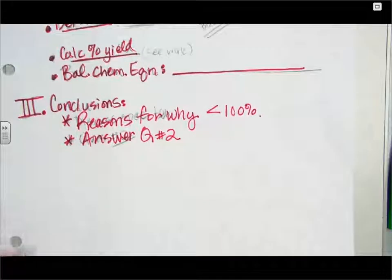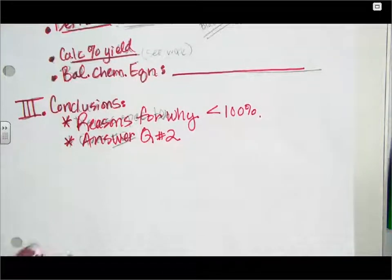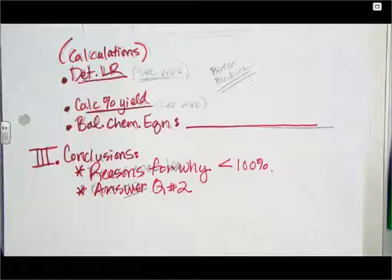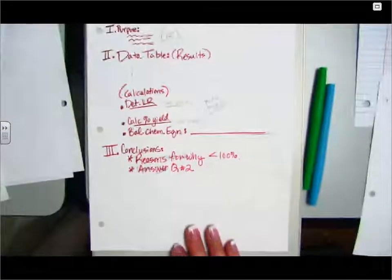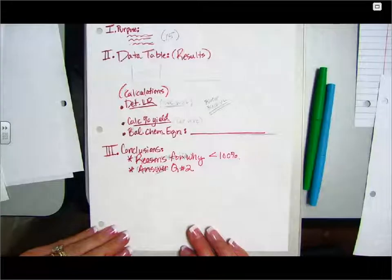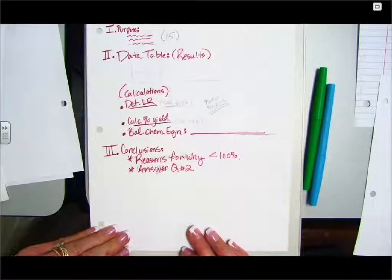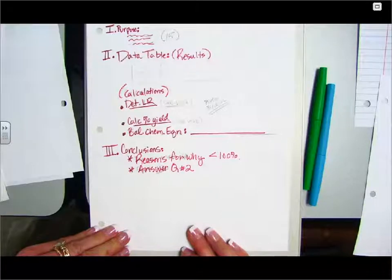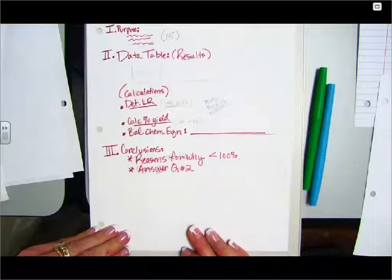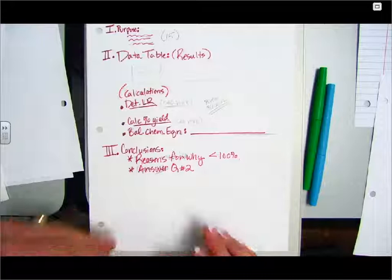Alright. So for this informal lab, that will be what you need to include. If there's any questions, please message me in Google Classroom. This lab is due, uploaded in Google Classroom, by 8:30 a.m. on this Friday, which will be the 16th of February, 2018. And also remember the hard copy for me to actually grade and write on is due at the beginning of third period. Alright. Thanks.